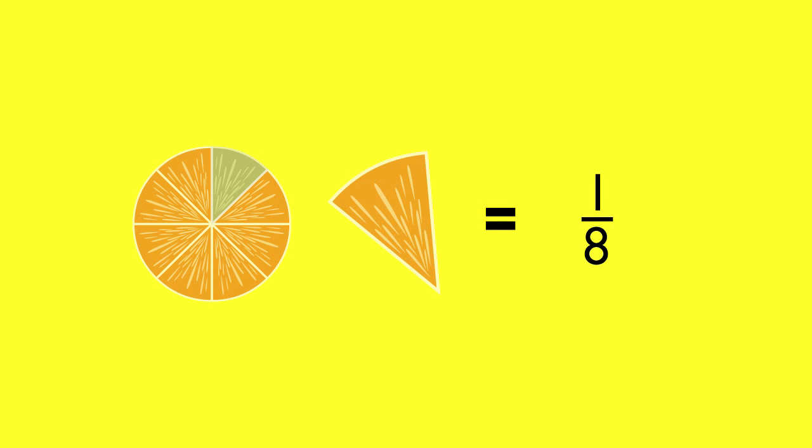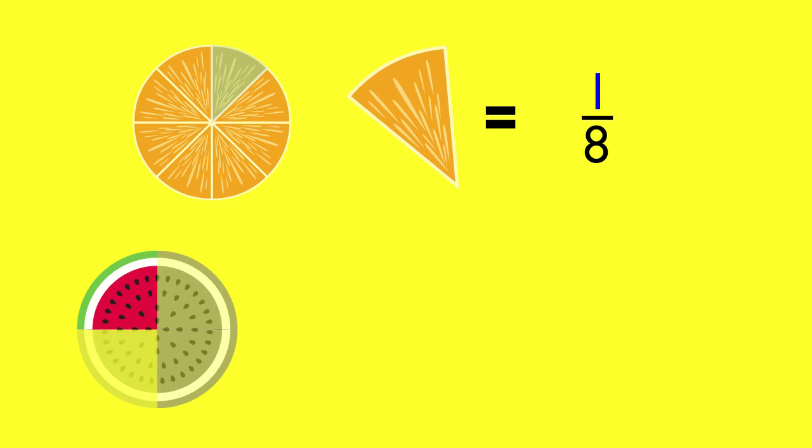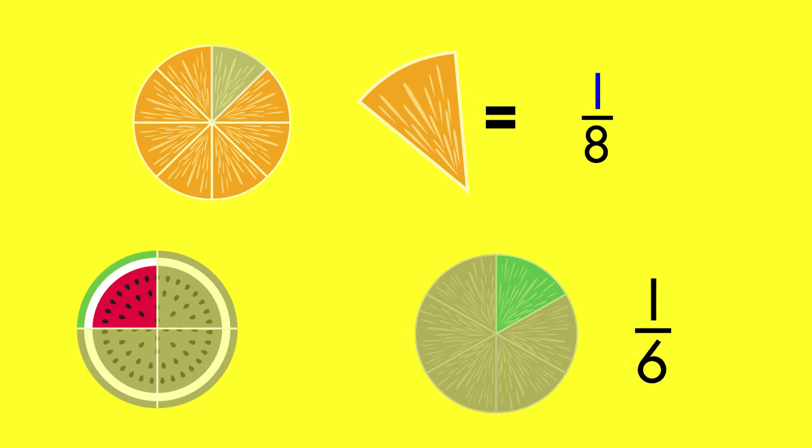A unit fraction shows one part of a whole. The orange slice is divided into eight equal parts. One part of the orange slice is one-eighth of the whole. The numerator of a unit fraction is always one. The denominator shows the number of parts in the whole.